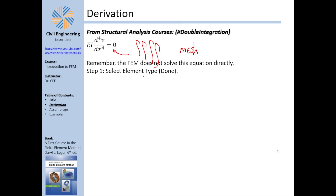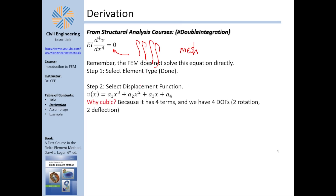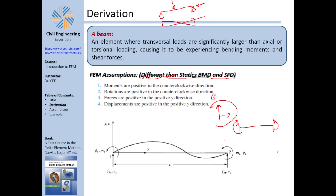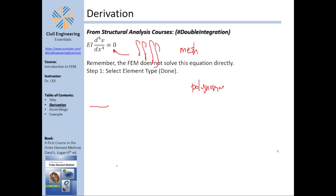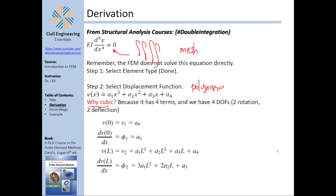Step one is selecting the element type — it's a beam. Step two is selecting the displacement function, which is a cubic polynomial. We use polynomials for continuity reasons discussed in previous lectures. It's cubic because a beam has four degrees of freedom: deflection and rotation at node one, and deflection and rotation at node two. Four degrees of freedom means four unknowns — a1, a2, a3, and a4.